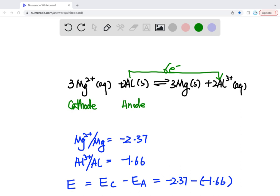So looking at this reaction, you will find that magnesium is reduced, it gains electrons. So the magnesium here is cathode, and here aluminum is losing electron, it's reducing agent, so it's an anode.